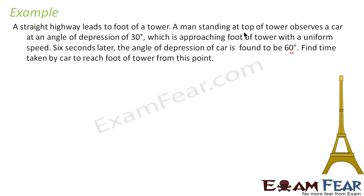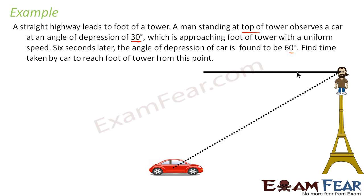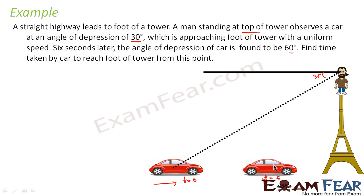Let's draw this tower. This is the tower. A man is standing at the top of the tower. There is a car and this guy observes the car. The angle of depression is 30 degrees — draw a horizontal line, this angle is 30 degrees. The car is approaching toward the tower with uniform speed, moving from one point to another. At t = 0 the car is at the far point, and at t = 6 seconds it has moved closer. The angle of depression then became 60 degrees.